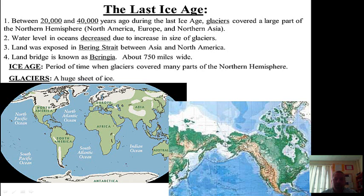If you look at the map on the right here, you can see Asia and North America. If you look closely, right in between Asia and North America, there's a narrow strip of water called the Bering Strait. During the Ice Age, this water that separated Asia from North America disappeared. Because of the glaciers, the water level in the oceans went down so much that the land in this area — today the Bering Strait, the Bering Sea — was exposed.